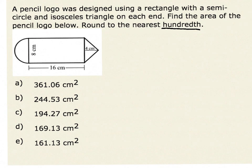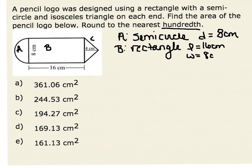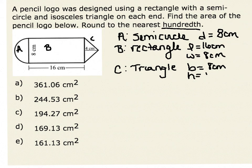In order to find this, we know that we have three shapes. Shape A is a semicircle with a diameter of 8 centimeters. Shape B is a rectangle with a length of 16 centimeters and a width of 8 centimeters. Finally, shape C is a triangle with a base of 8 centimeters and a height of 4 centimeters.